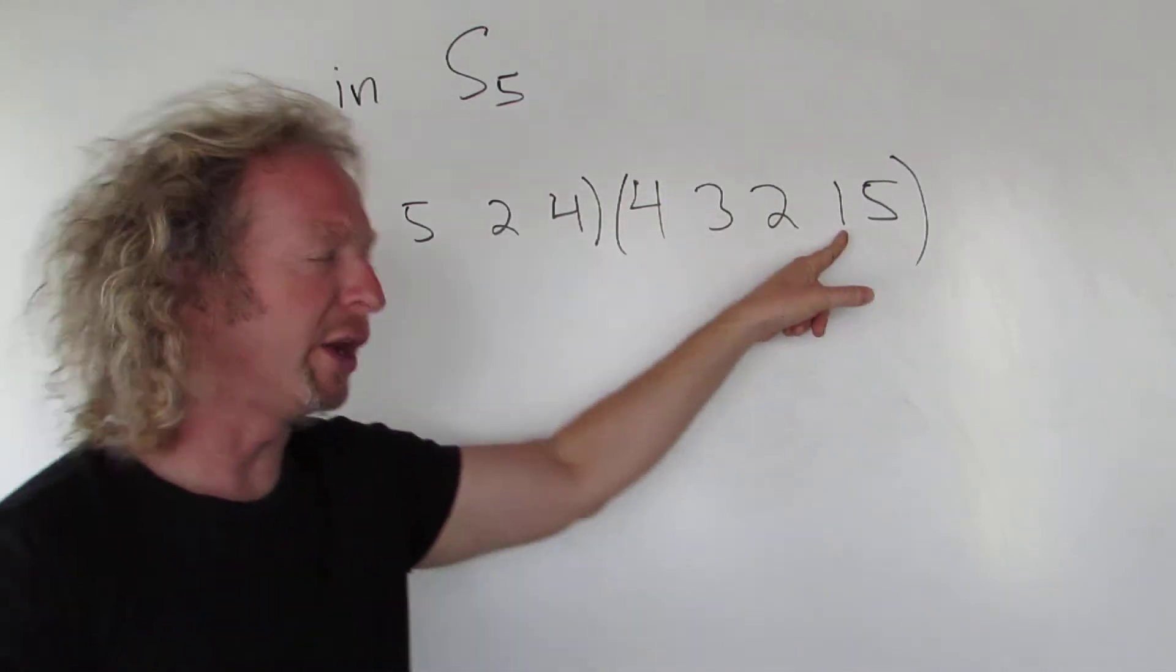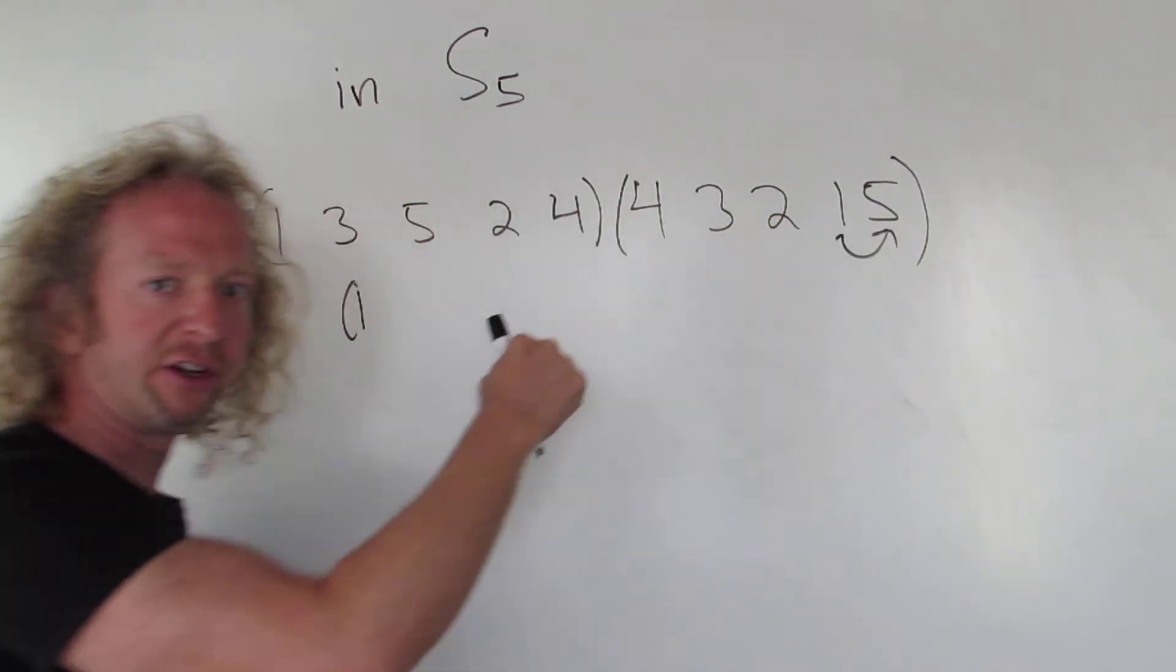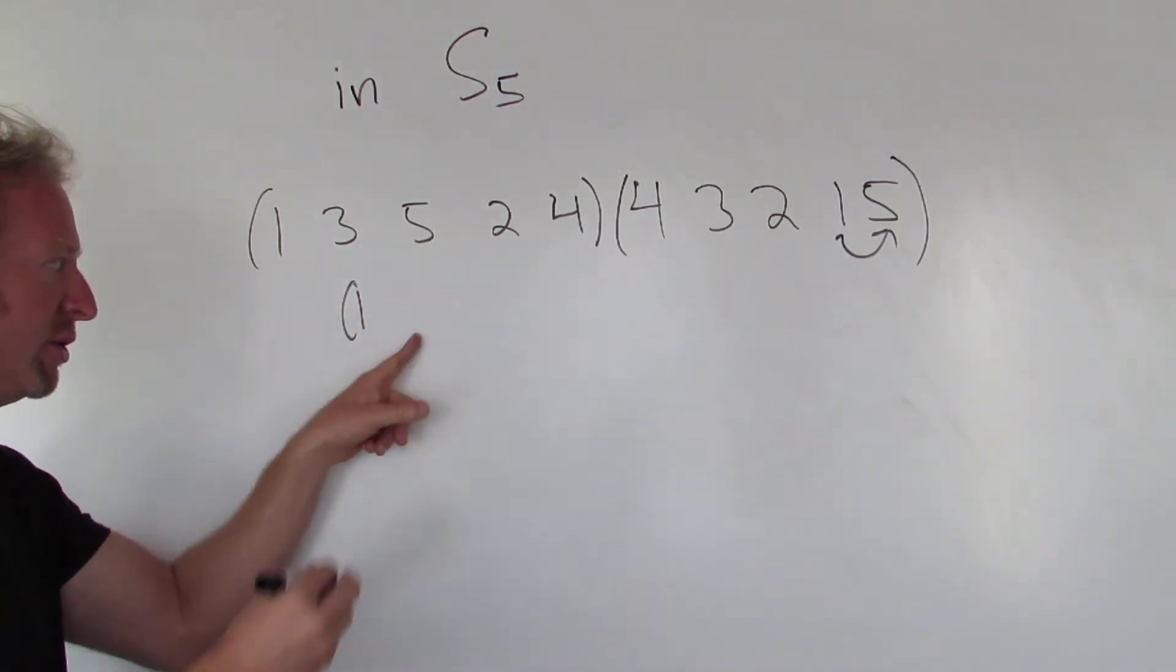So 1 goes to 5. Then you look over here and you say where does 5 go? 5 goes to 2. So 1 goes to 2.